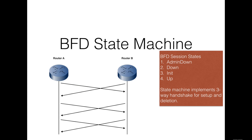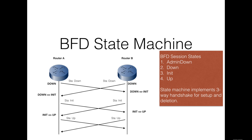BFD sessions can cycle within four states: admin down, init, up, and down. The state field of the BFD control packet indicates the current state. The BFD machine implements a three-way handshake before session setup or teardown, ensuring both systems detect the status change. BFD is initially in the down state, indicated in the control packets routers A and B exchange. After receiving a BFD packet, Router B changes its state to init and no longer processes received BFD packets with the state field set to down. After receiving a BFD packet with the state field as init, Router B changes its local BFD session status to up, and a similar process is carried out on Router A.